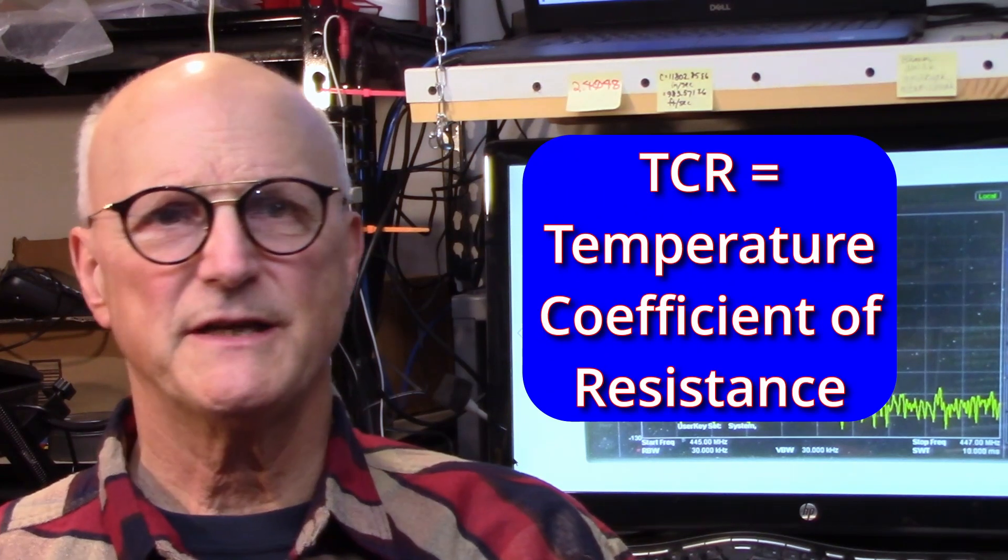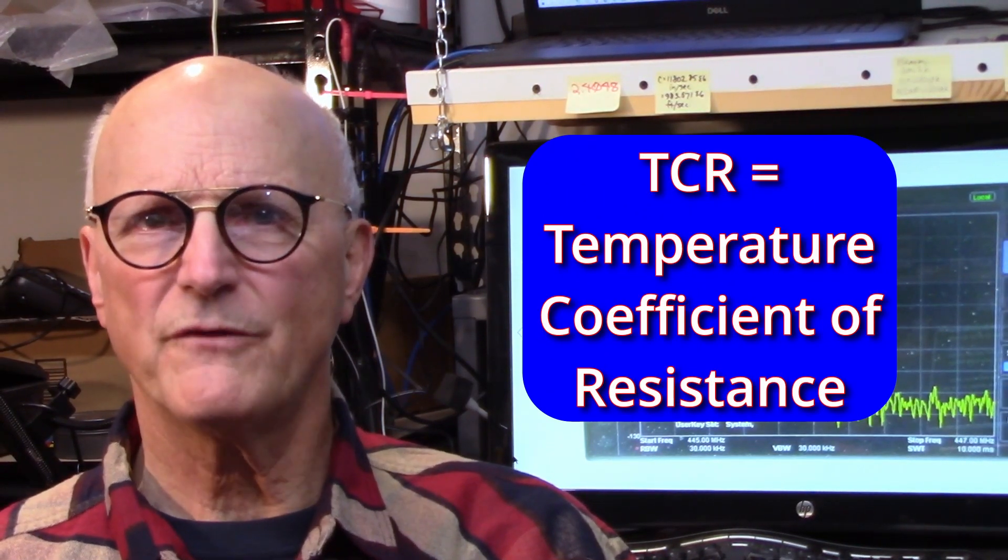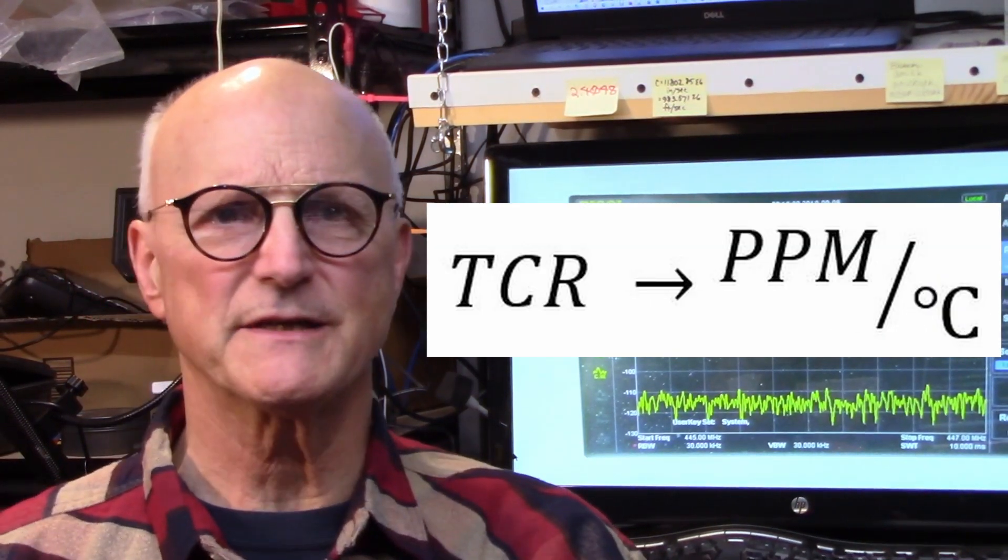Maybe you've looked at the datasheet for a resistor and you see TCR, which stands for the Temperature Coefficient of Resistance. And it is in parts per million per degree Celsius. We've heard this in the news and TV shows and movies when they talk about concentrations of this or that in this solution or in the air sample or whatever.